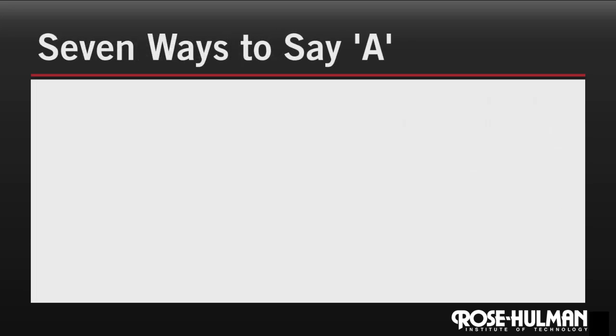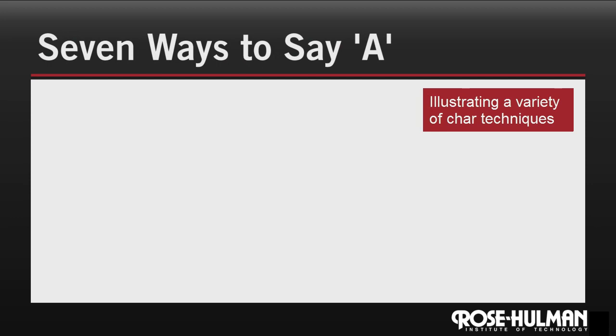So let's look at another set of examples. Seven ways to say A. The easiest way to print out an A in C is to just use a printf with a single character long string. But we've seen that we could actually use a format specifier for character, and then pass the A character, notice the single quotes, to printf. That'll also print out an A.